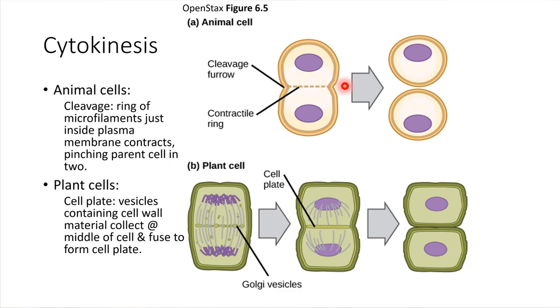There's a ring of filaments that contracts around the middle, and it ends up pinching the cell in two. So that's cytokinesis in animal cells.